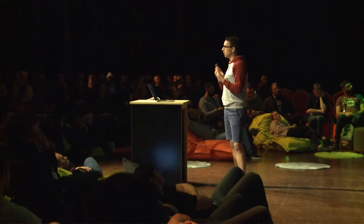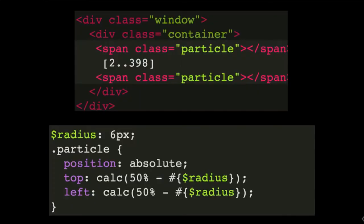The last part we need in the HTML are the particles. In my case, I'm creating 400 spans. We define the size wanted for the dots, and we absolutely position them in the center of the container.